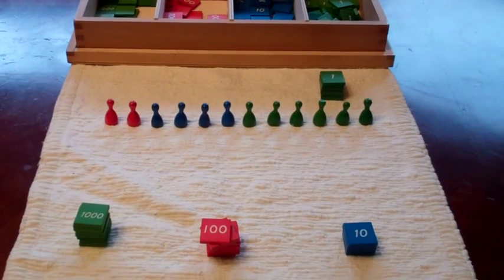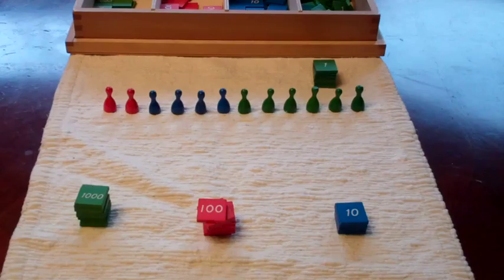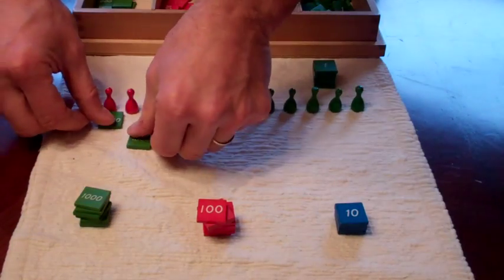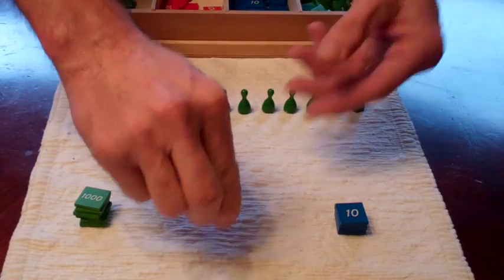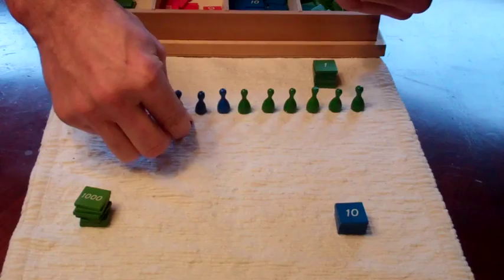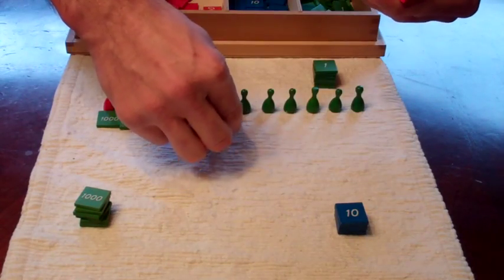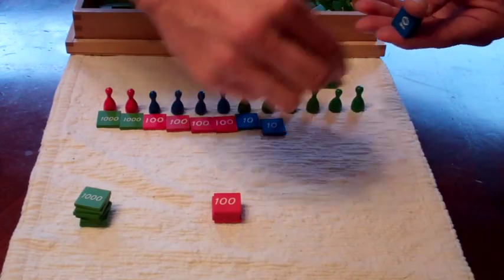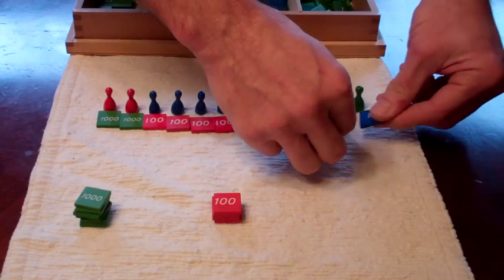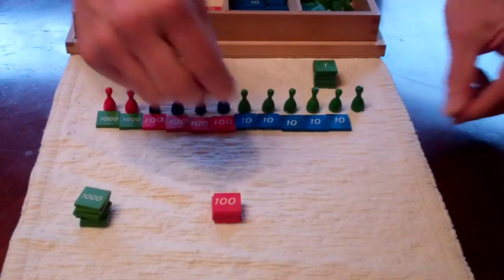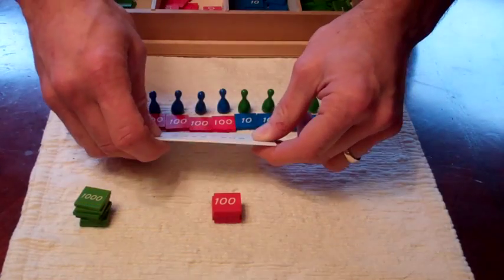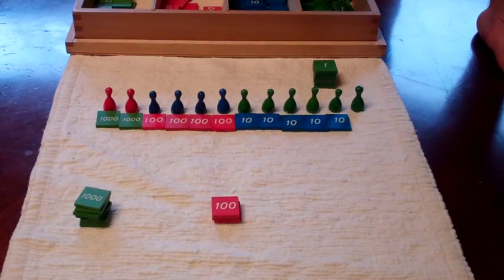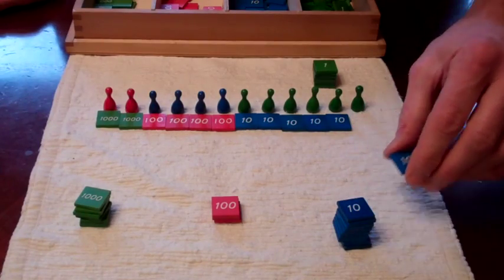So I'm going to start dividing up our dividend. Thousands to the hundreds. Hundreds to the tens. And tens to the units. And as you can see, we don't have enough tens. And in division, the answer is what one person gets. Everybody gets the same amount. So we need to exchange a hundred for ten tens. One hundred equals ten tens.